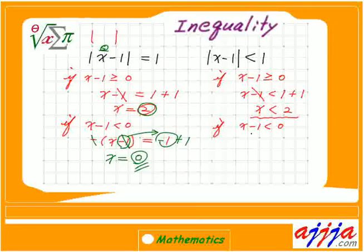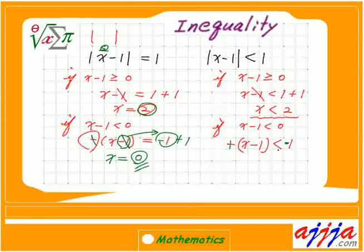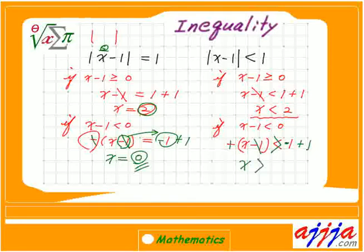Now the other case: you have to put a negative sign in front — negative (x minus 1) is less than 1. Change the sign to positive, move to the right-hand side, but you have to change the direction of the inequality. So x minus 1, plus 1 — that means x is greater than 0.